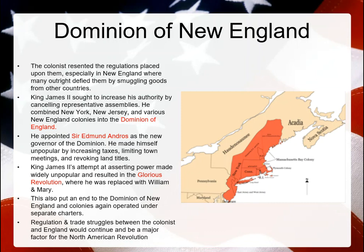The Glorious Revolution also put an end to the Dominion of New England, and colonists again started operating under separate charters. But keep in mind, the regulation and trade struggles between colonists and England were not the first time and not the last. These constant regulations — tightening the noose around colonists who were so used to the autonomy they had enjoyed — would ultimately lead to the Revolutionary War. After a war or so, England would start making colonists do more and pay more, and it would cause serious problems.